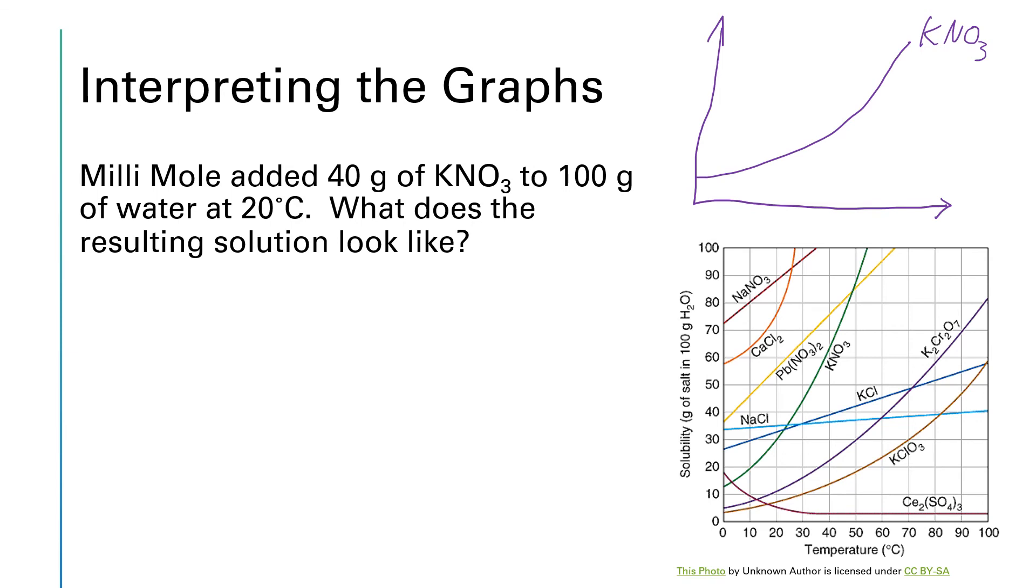We are working at 20 degrees C, which on the bottom graph is roughly here. And if we go up to the curve and read off how many grams that is for potassium nitrate at 20 degrees, we're looking at about 30 grams. So this is telling us that at 20 degrees, which is just ever so slightly less than room temperature, Millimole should be able to get 30 grams to dissolve. But she didn't put 30 grams into her beaker. She put in 40. So if only 30 grams will dissolve, that means 10 of those grams are undissolved and will just fall to the bottom of the beaker.